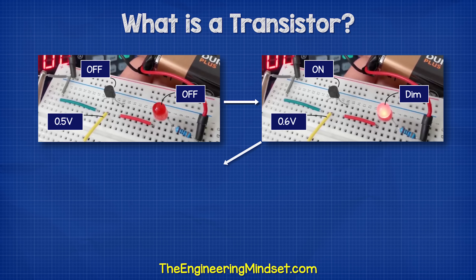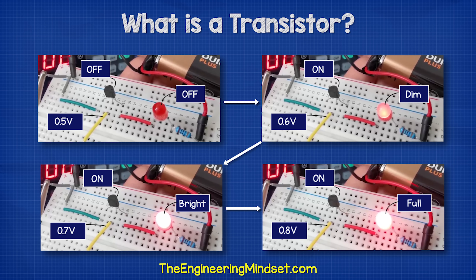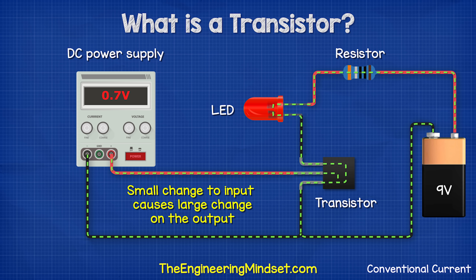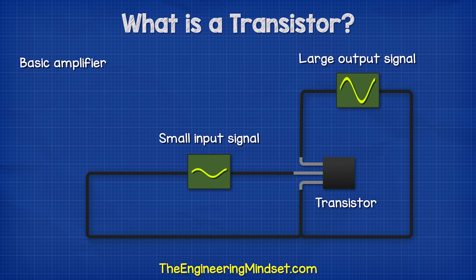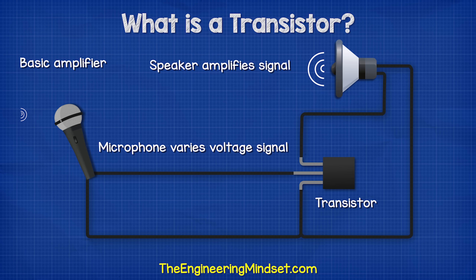What's happening is we're using a small voltage and current to control a larger voltage and current. A small change to the voltage on the base pin causes a large change on the main circuit. Therefore, if we input a signal to the base pin, the transistor acts as an amplifier. We could connect a microphone which varies the voltage signal on the base pin, and this will amplify a speaker in the main circuit to form a very basic amplifier.